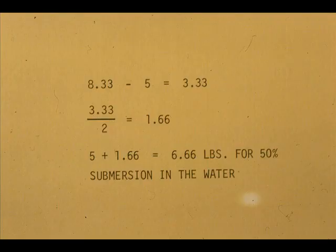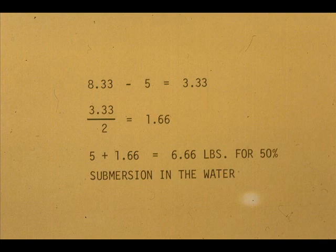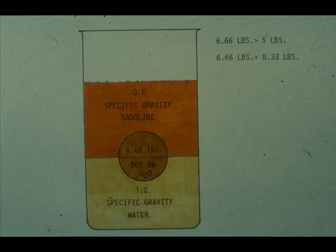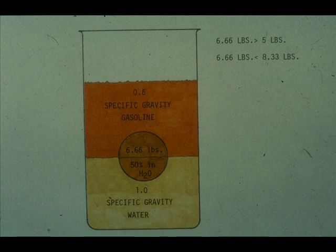To calculate the weight for 50% submersion in the water, take one-half the difference between the two extremes and add the difference to the lesser weight. 6.66 pounds is the correct float weight for the 50% submersion in water. It also satisfies the condition of being more than 5 and less than 8.33 pounds.